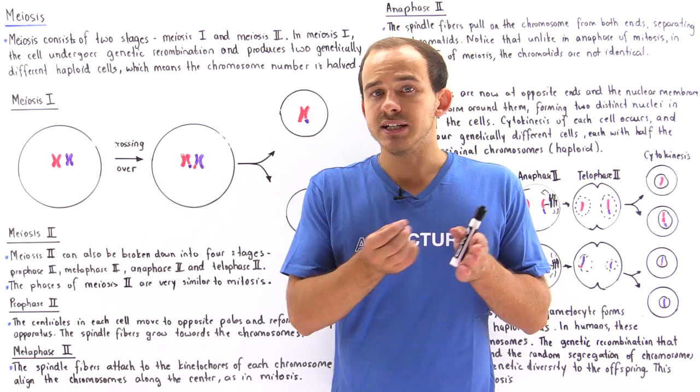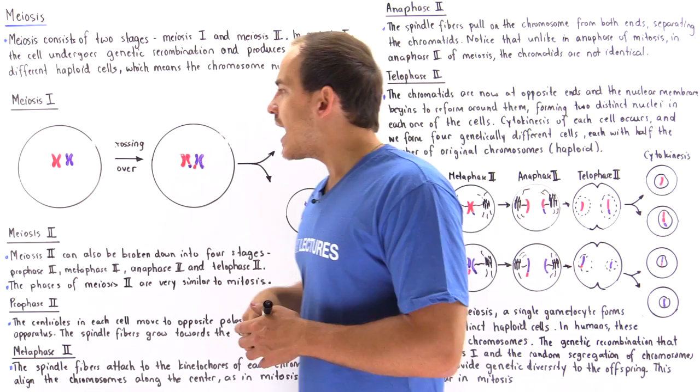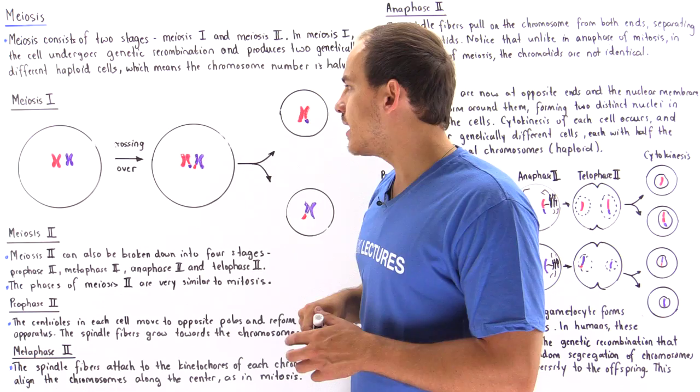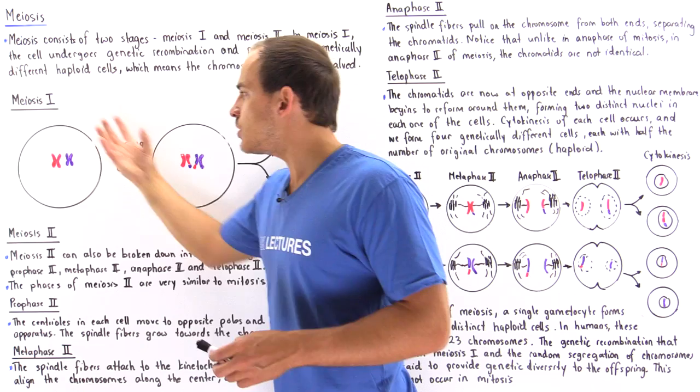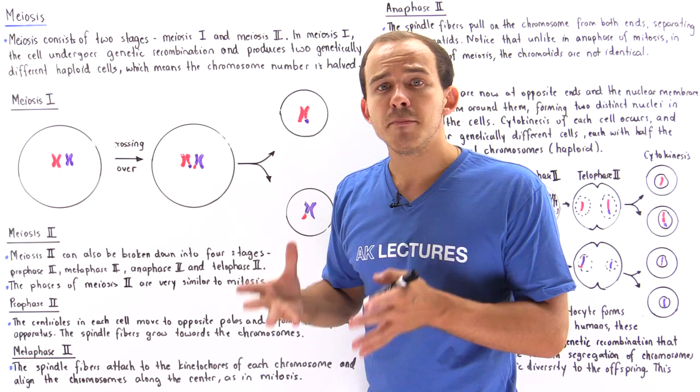This diagram generalizes the process of meiosis 1. Suppose we begin with a cell that consists of a single pair of homologous chromosomes — chromosome 1 and chromosome 2. During prophase 1 of meiosis, this homologous pair undergoes the process of crossing over and we basically form recombinant chromosomes.